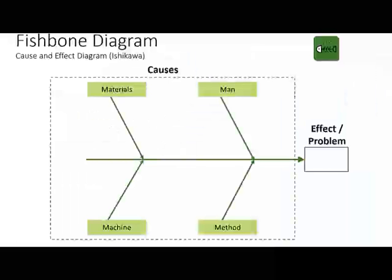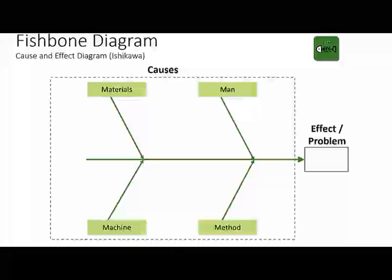I'm going to send out a template of the fishbone so you can use it in your Just-in-Time unit. Put the identified issue into the head of the fishbone, do some brainstorming as a group — cross-functional would be even better — to come up with potential causes, and then identify possible actions. That's in a nutshell how to use the fishbone diagram. If you have any questions, don't hesitate to ask.